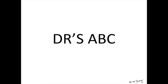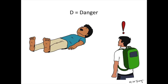If you ever see someone who is collapsed or unconscious you must remember the DR's ABC. D is for Danger. Before you begin, check your surroundings to ensure going to help someone will not put your own life at risk. Next, if you can safely reach the person, try to get them out of any danger they may be in.